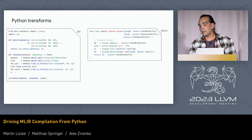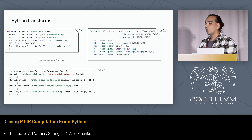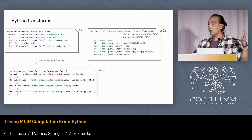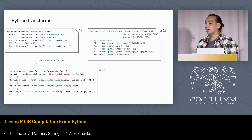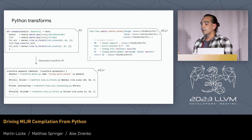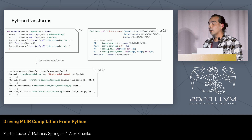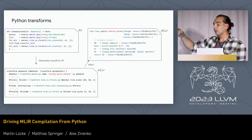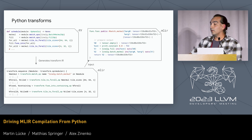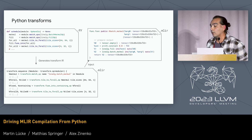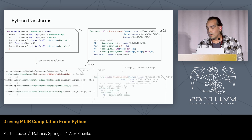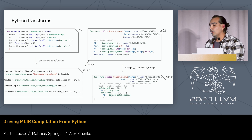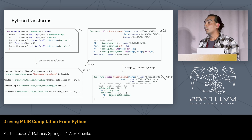So how does this work? The schedule actually generates the transform IR we saw before — it generates the optimization recipe. It gives the user an interface to define the schedule. What we do is we inject the schedule — this MLIR — next to the payload, next to the computation, apply the transform script, and get the optimized IR.